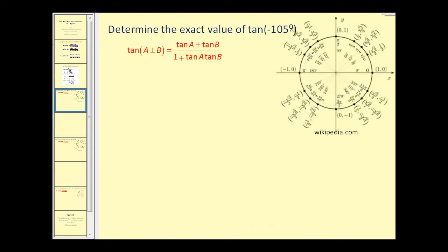Let's look at some problems. To find the exact value of tangent of negative 105 degrees, we use reference angles. Negative 105 degrees equals negative 60 degrees minus 45 degrees. So we use negative 60 for angle A and 45 for angle B, applying the difference identity.